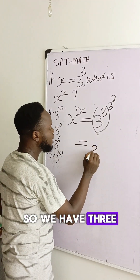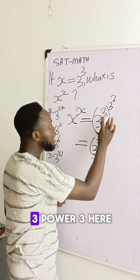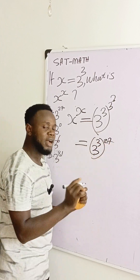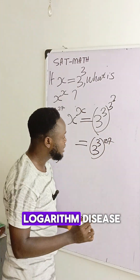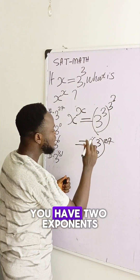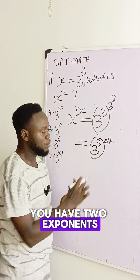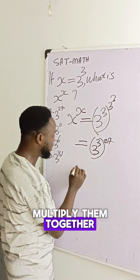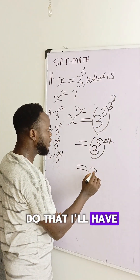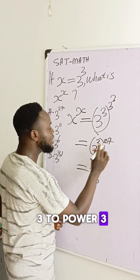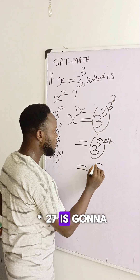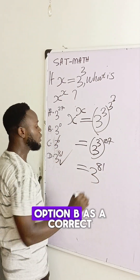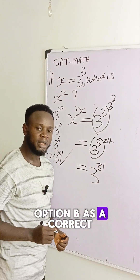So we have 3 raised to the power 3, and 3 power 3 here is 27. According to the exponent rule of indices, you have two exponents — one in the brackets and one outside. Apply them together. So I will have 3 to the power 3 times 27, which gives 3 to the power 81. That makes option B the correct answer.